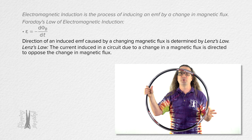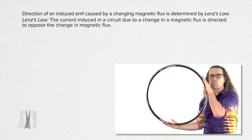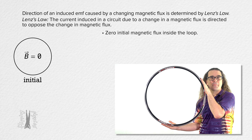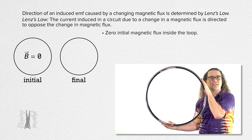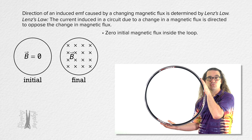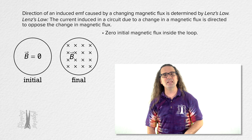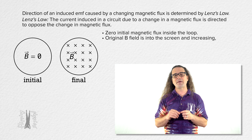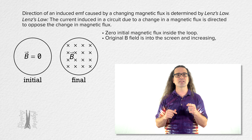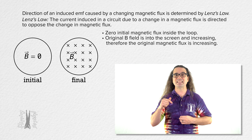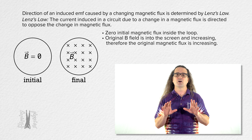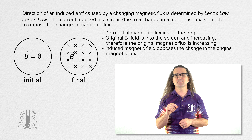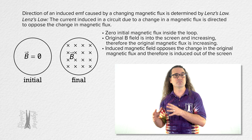Let's learn from doing examples. We have our wire loop and initially there is zero magnetic field inside the loop and therefore zero magnetic flux inside the loop. There is a magnetic field into the screen. The induced EMF and induced current are caused by the change in the magnetic flux, so the original magnetic field inside the loop is into the screen and increasing, therefore the original magnetic flux inside the loop is increasing. According to Lenz's law, the induced magnetic field opposes the change in the magnetic flux, and therefore there is an induced magnetic field out of the screen.